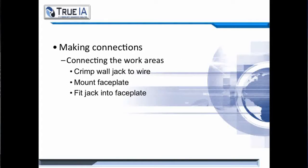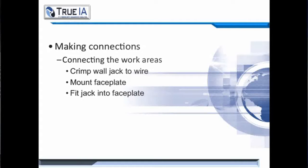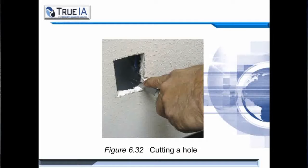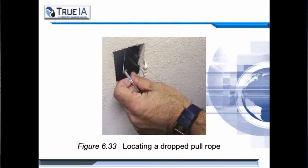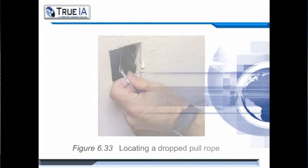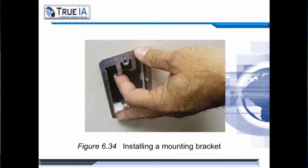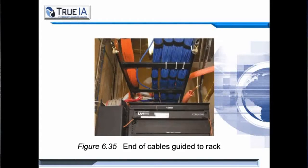Now that you've pulled your cable, we need to think about making connections. Connecting to the work areas, you're going to need to crimp the wall jack and wire, mount a face plate, and fit the jack itself into that face plate. You'll need to cut a hole in the wall, then reach in and locate the pulled wire — this is pretty easy to do with a simple screw and some string. Next, you'll install the mounting bracket.